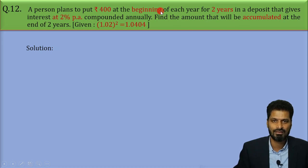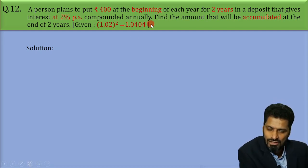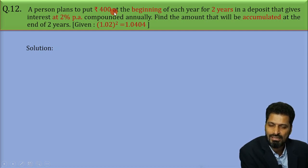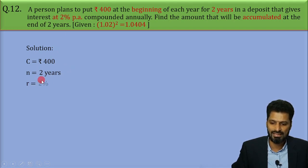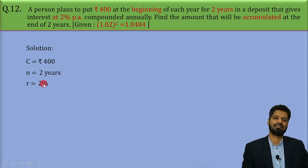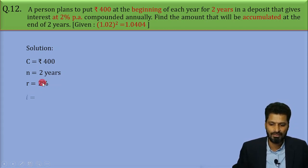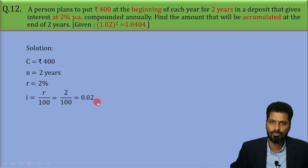Alright, now let's note down the information. We are given with the amount of annuity as rupees 400. So, that is C is given as rupees 400. Number of years n is given as two years and rate of interest r is given as 2%, right? And if r is 2%, what will be the value of i? Yes, i will be r upon 100 which is 2 upon 100 that will be 0.02.